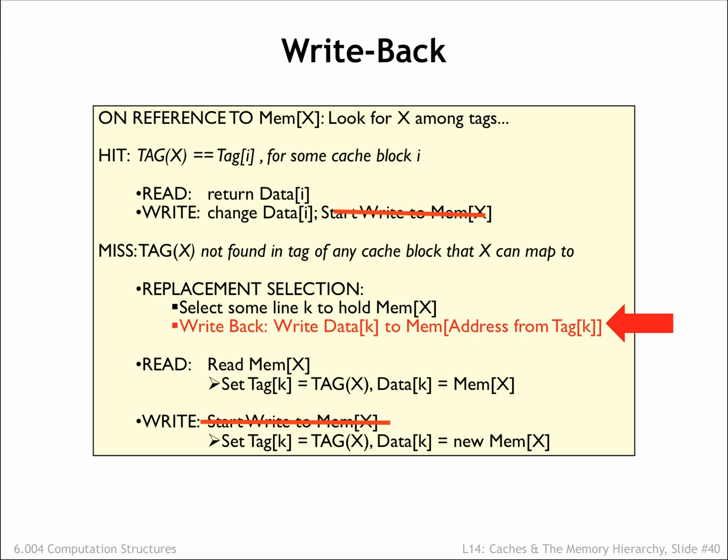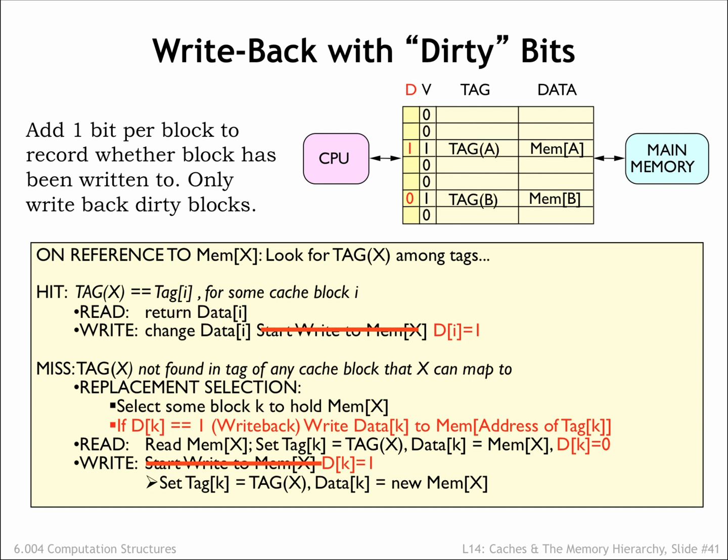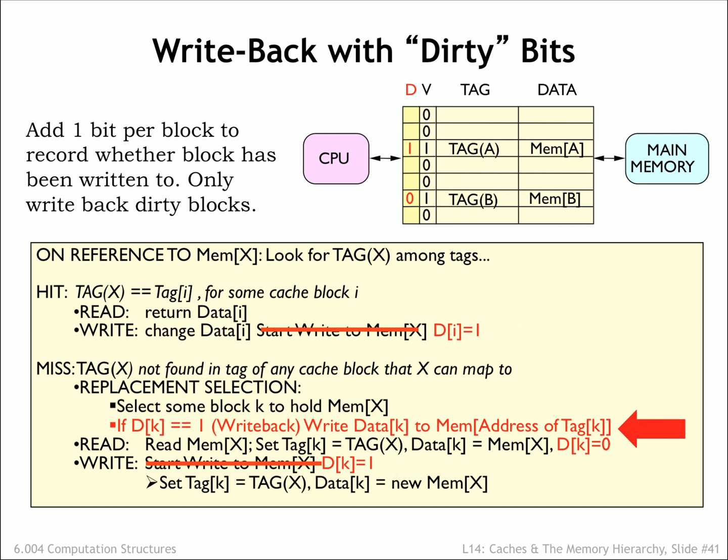This does a write-back of all replaced cache lines whether or not they've been written to. We can avoid unnecessary write-backs by adding another state bit to each cache line: the dirty bit. The dirty bit is set to 0 when a cache line is filled during a cache miss. If a subsequent write operation changes the data in a cache line, the dirty bit is set to 1, indicating that the value in the cache now differs from the value in main memory. When a cache line is selected for replacement, we only need to write its data back to main memory if its dirty bit is 1. So a write-back strategy with a dirty bit gives an elegant solution that minimizes the number of writes to main memory and only delays the CPU on a cache miss if a dirty cache line needs to be written back to memory.